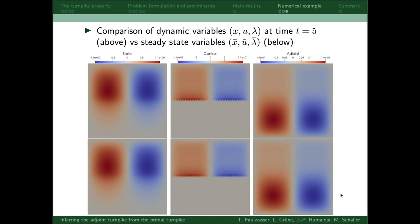This is because the dynamic solution is at the turnpike at this time instance, meaning that the dynamic variables are arbitrarily close to the corresponding steady state variables.